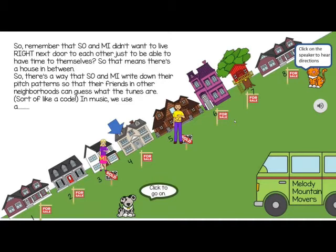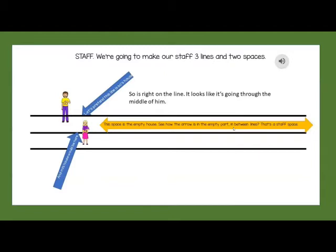It explains why Sol and Me don't want to live right next door to each other. Then it goes from the spacing of the houses to a three-line staff and talks about the lines and the spaces, so students can see where Me is in relation to Sol.